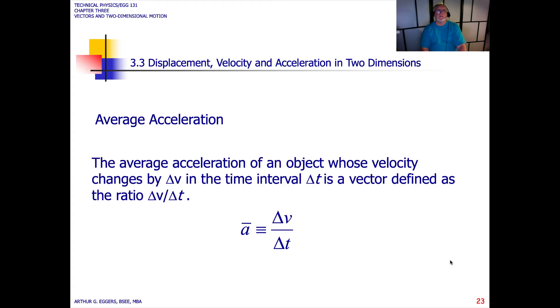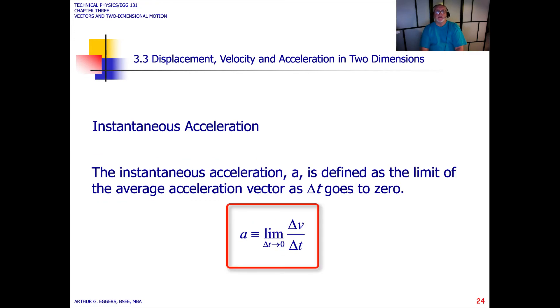Next, we look at the definition for average acceleration. The average acceleration of an object whose velocity changes by delta v in a time interval delta t is a vector defined as the ratio of delta v over delta t. The instantaneous acceleration follows the same suit, defined as the limit of the average acceleration vector as the time goes to zero. We've got the same limit relationship.